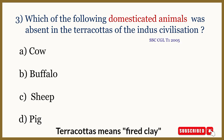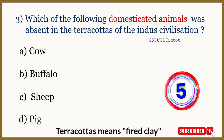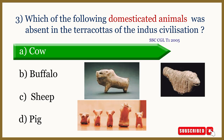Question number 3: Which of the following domesticated animals was absent in the terracottas of the Indus civilization? The correct answer is cow.